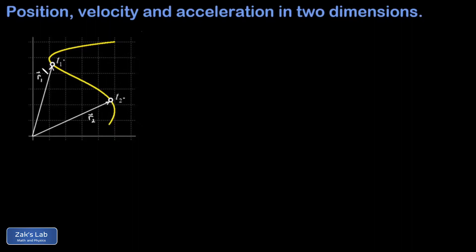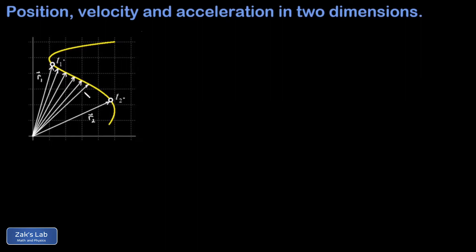So there's r1, the position at time 1, and r2, the position at time 2, and anywhere in between we could write a position vector as a function of time for some arbitrary moment in time t. As a particle travels from t1 to t2, we're watching a position vector rotate and grow as it continues to point at the location of the object for each moment in time.